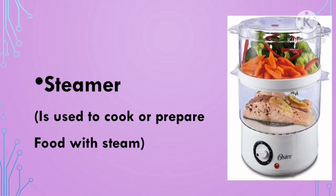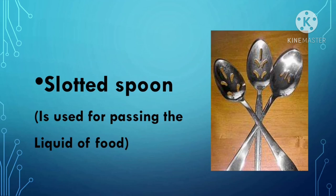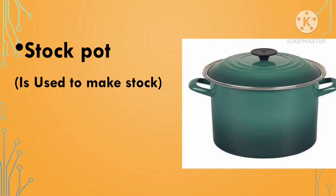Steamer is used to cook or prepare food with steam. Saucepan is used for boiling water and also for steaming. Slotted spoon is used for draining the liquid from food. Stock pan is used to make stock.